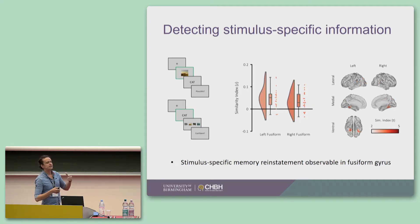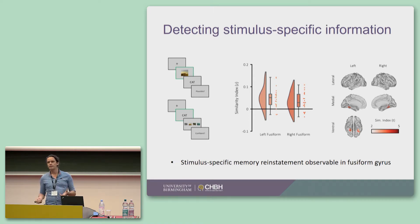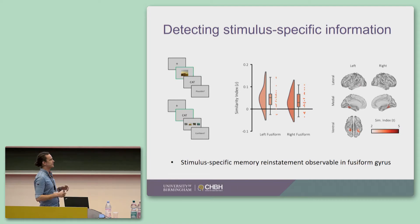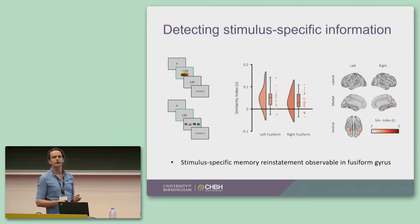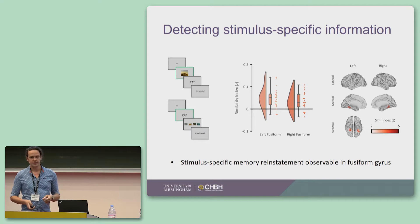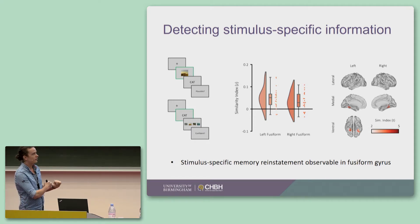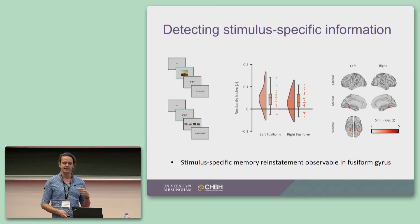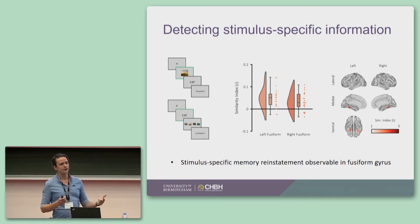Similarly, when we ask people to retrieve that stimulus, we can decode what they are remembering based on the patterns we see when they are perceiving the videos. This is not so much in early visual areas, but much more further along in higher-order visual areas, particularly in the fusiform gyrus. So regardless of whether you're perceiving or retrieving information, we can very nicely decode it with the fMRI, and we can use this on a trial-by-trial level.